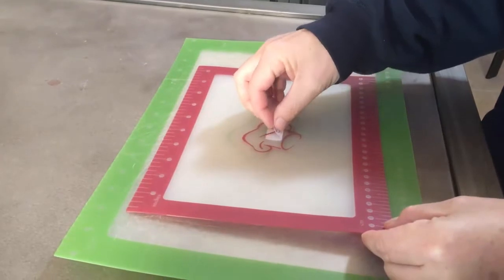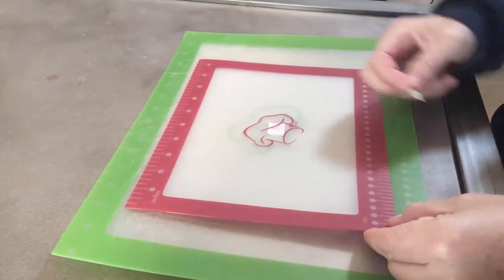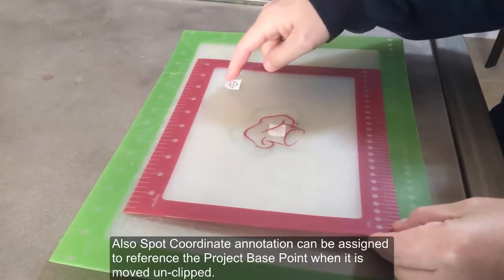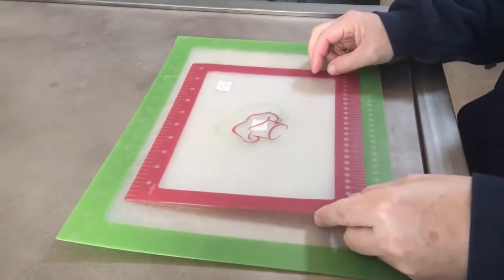Now when I unclip the project base point, the project coordinate system stays in the same place, but now I can put the marker here, and it's referencing the values that you see here are still referencing the underlying shared coordinate system, which is what's confusing to most people.